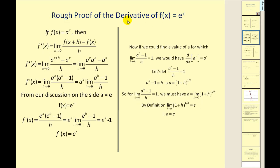Let's take a quick look at a rough proof of the derivative of f of x equals e to the x. We start with the basic exponential function, apply the limit definition of derivative, do our substitution, do some algebra, and factor out a to the x. What we have is a to the x times a special limit. If we knew the value of a that would make this limit equal to one, then we would have the case where the exponential function is its own derivative.